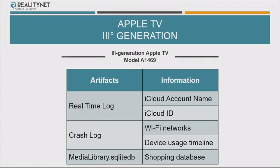These are probably the most interesting ones. You can get the iCloud account name and the iCloud ID. This could be useful if you have a locked iPhone and you want to ask Apple to provide data from this user but don't know the user ID — if you have an Apple TV, you can get the user ID from the Apple TV and then go to Apple and ask for the data. It's an option.